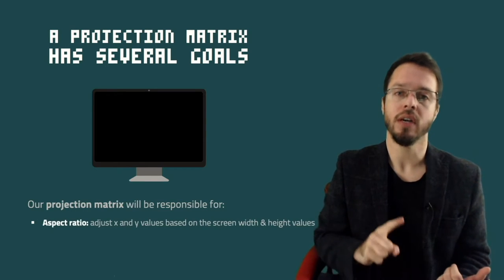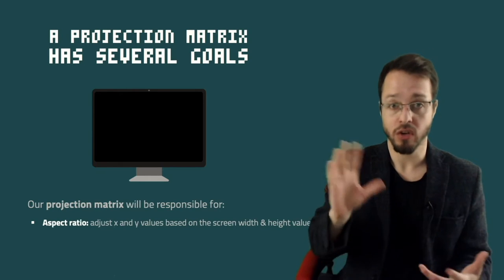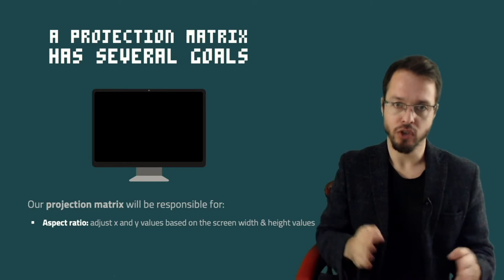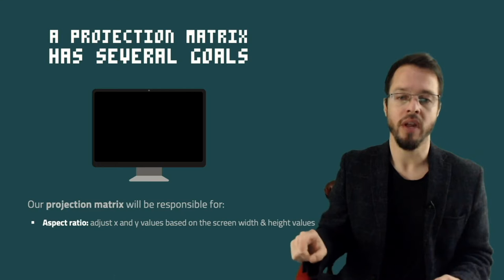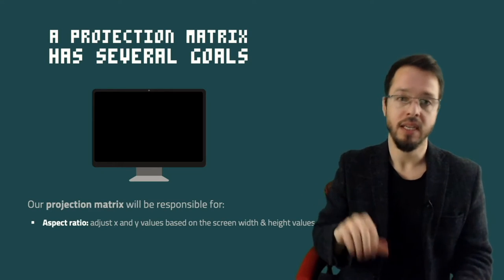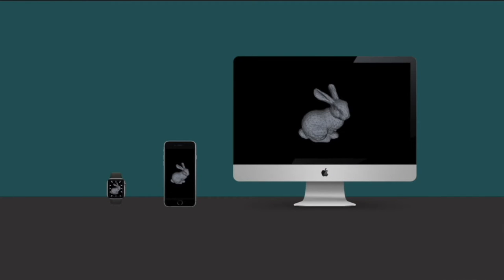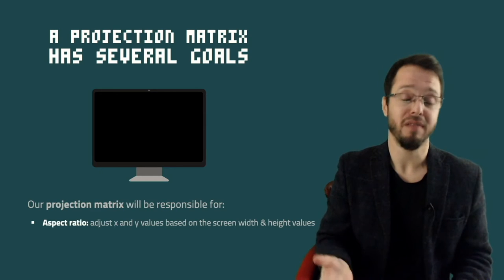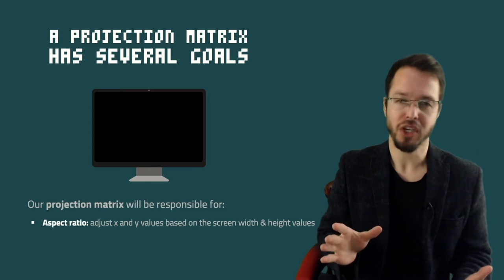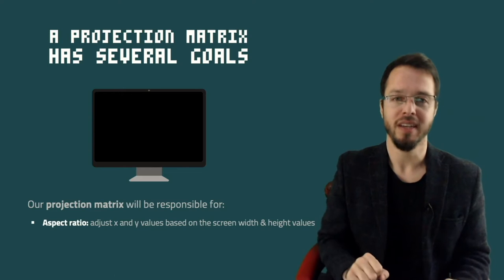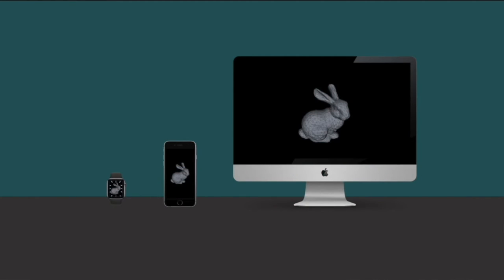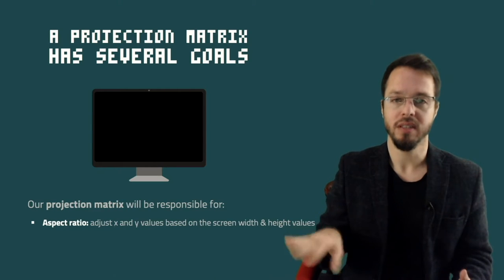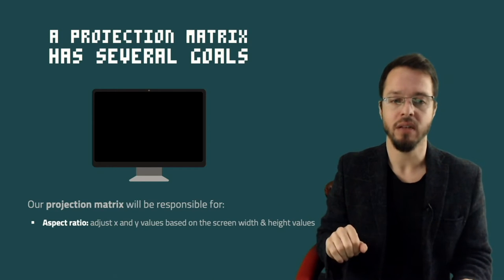The first one is accounting for the aspect ratio of our monitor, our screen, our device. We are going to use the projection matrix to adjust the x and y values — shrink or grow them based on our screen width and height dimensions. Different monitors and devices have different resolutions and different aspect ratios. Some monitors are 16 by 10, others are 16 by 9, others are 4 by 3. We have to take into account this aspect ratio. That is the first task of the perspective projection matrix.